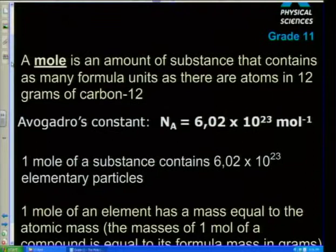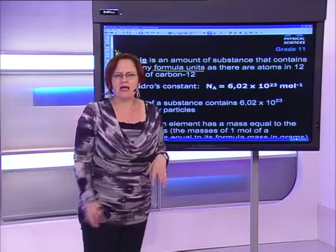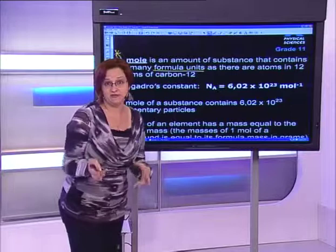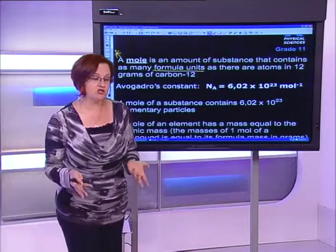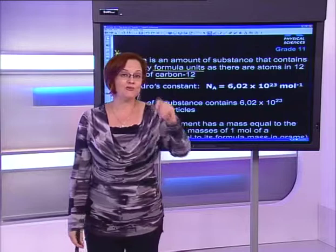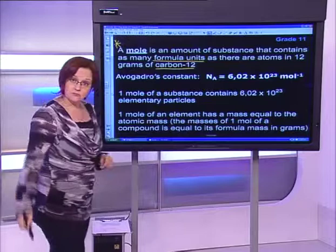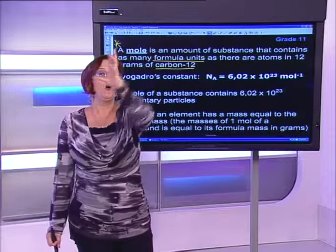Number one: a mole is the amount of substance that contains as many formula units as there are atoms in 12 grams of carbon-12. Why carbon-12? Hopefully you remember in grade 10 we compared relative atomic mass to hydrogen first, but that definition changed to carbon because carbon is the most abundant and most stable. Carbon-12 is its most stable isotope. Avogadro's number, Nₐ, is 6.02 × 10²³ per mole.